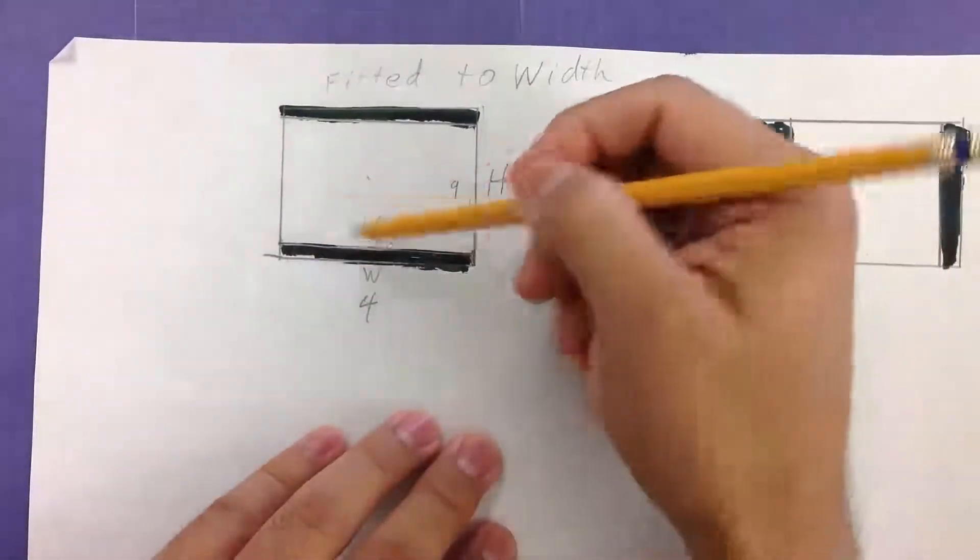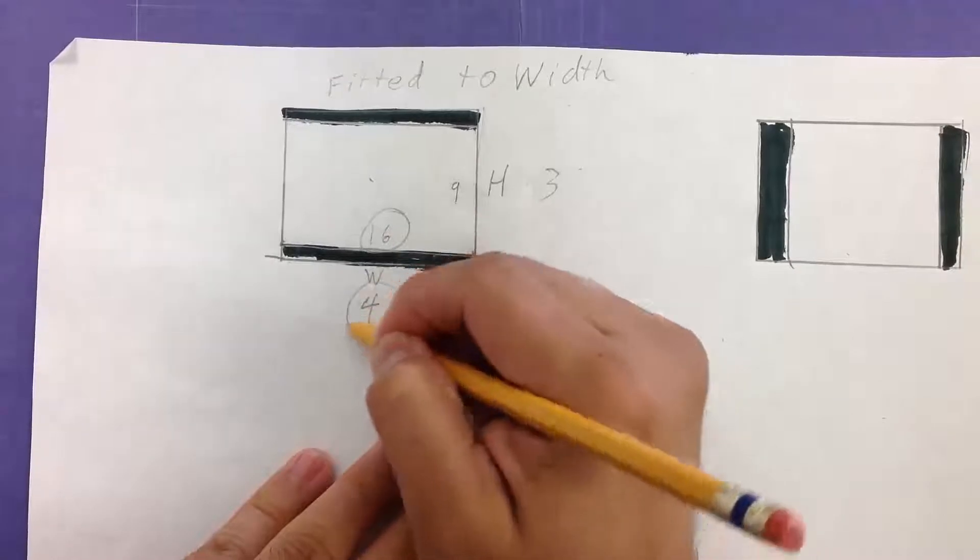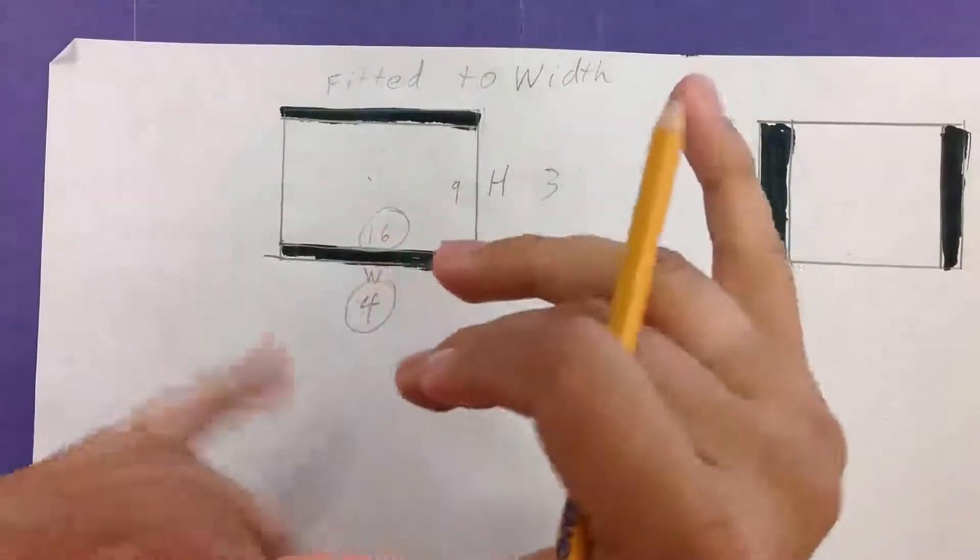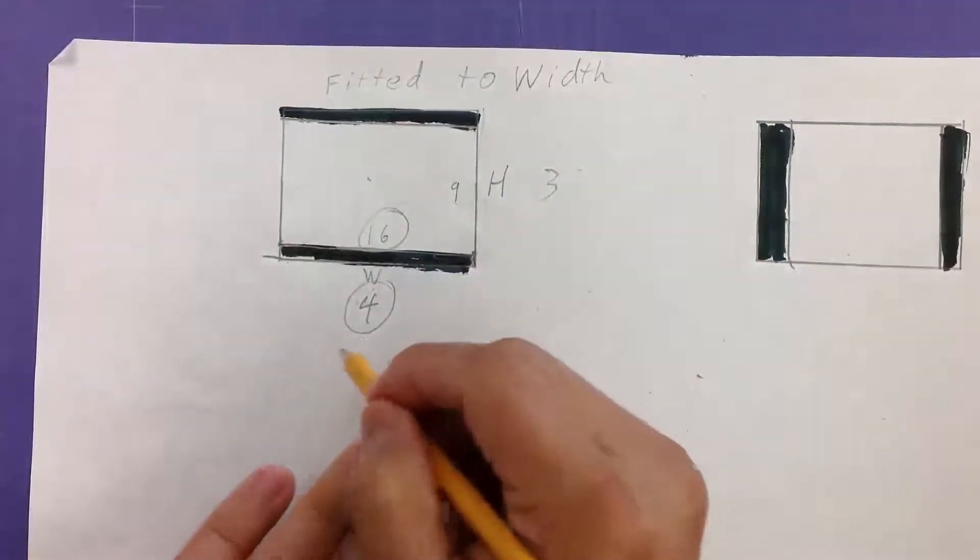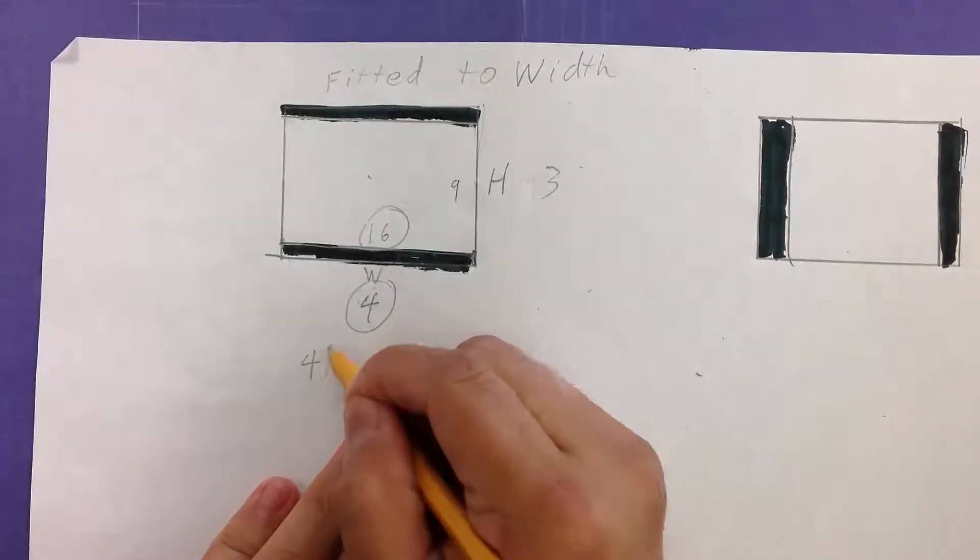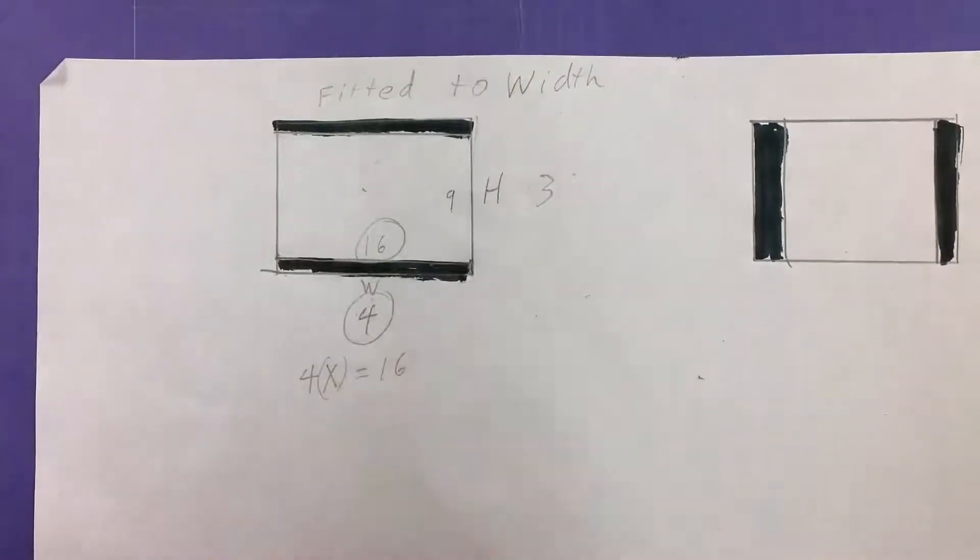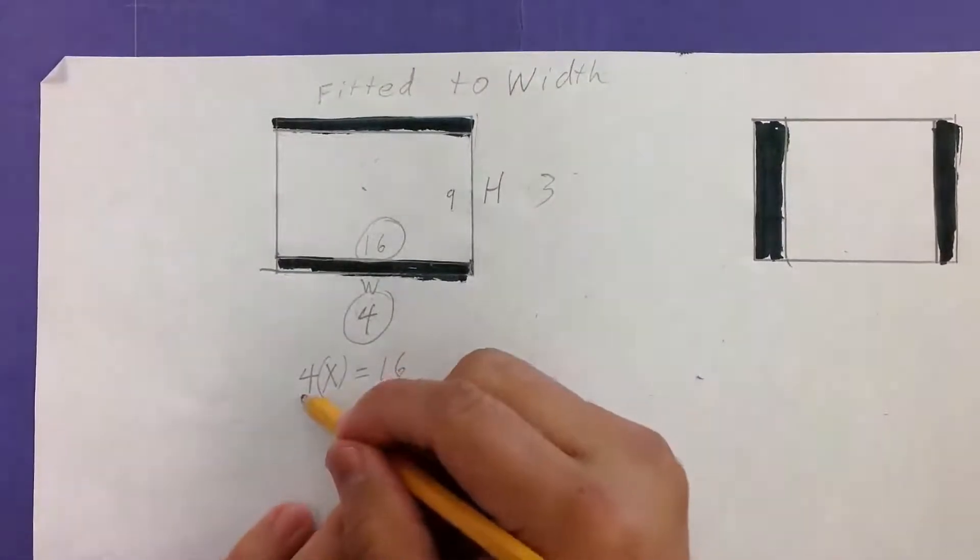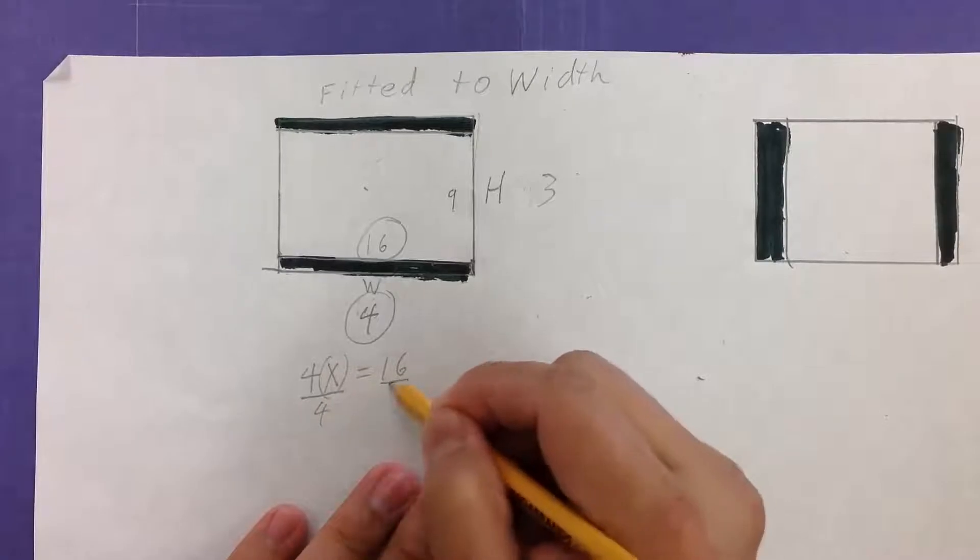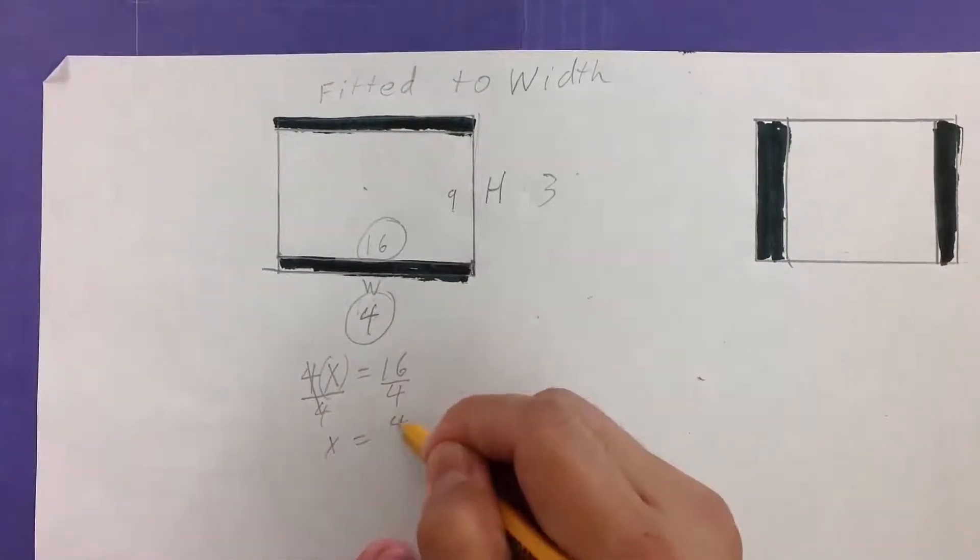Now we need to think, since it's fitted to it, this part and this part have to be exactly the same. Right now, they're not. So we can just do this mathematically. 4 times x, which is our scale factor, is equal to 16. Solve for x. Divide by 4. This gives me x equal to 4.